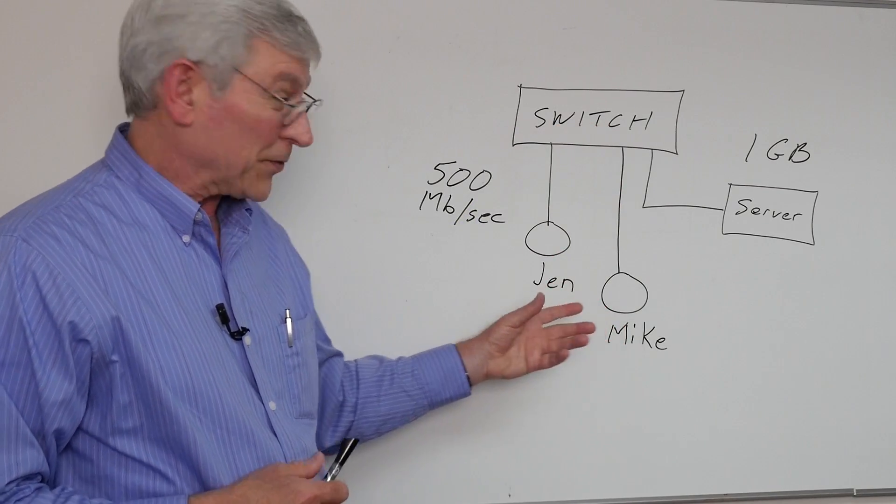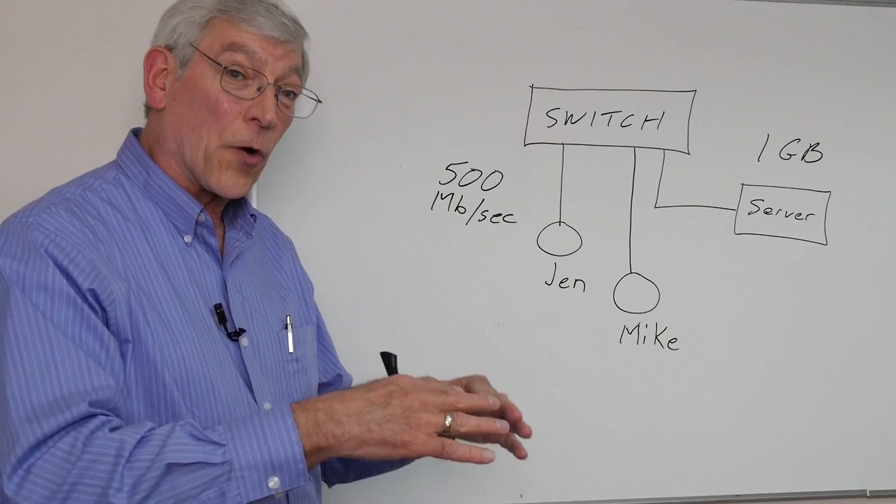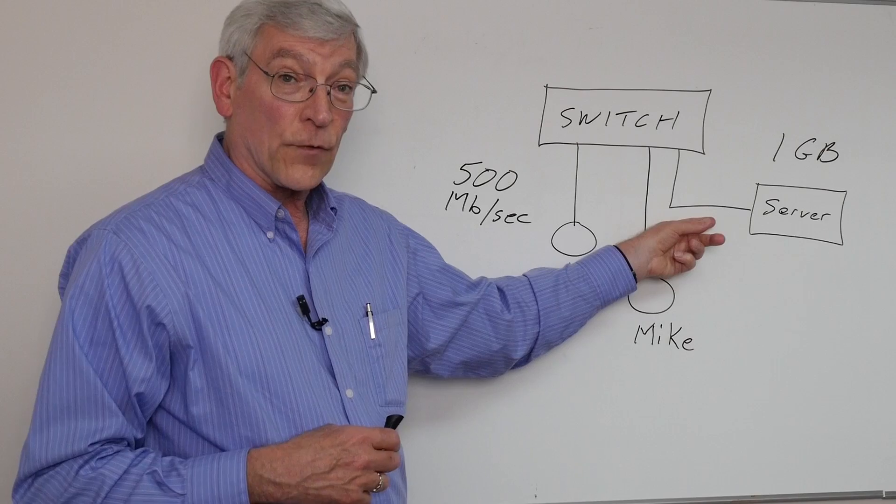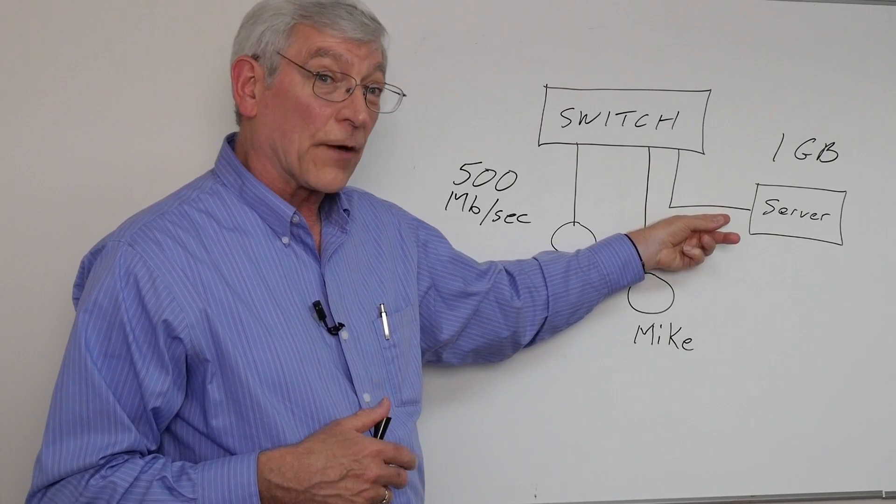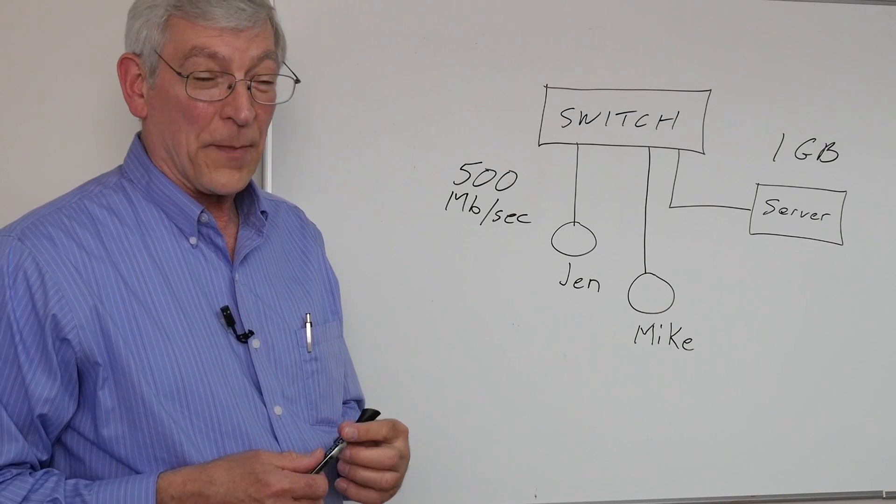Now, if we add a whole bunch of users, this transfer speed gets to be slower and slower for each individual user, even though the speed out of the server is the same. But this is now a combined data stream for several users. Can you see how this problem is going to affect us in the wireless environment?